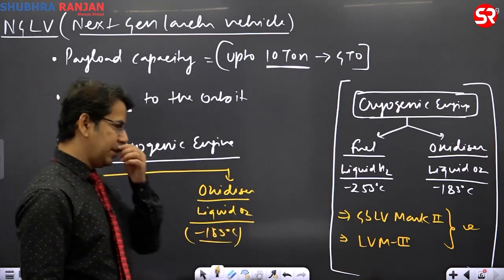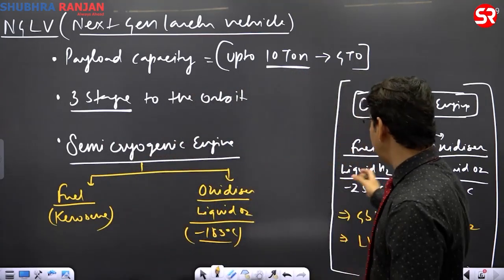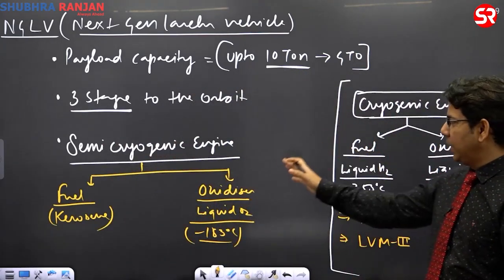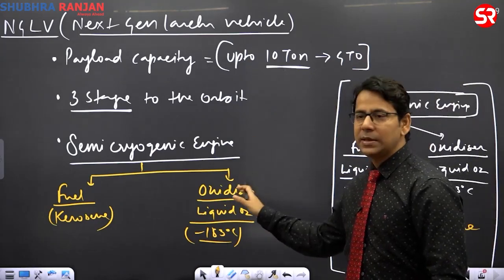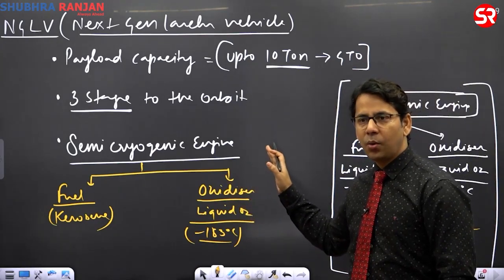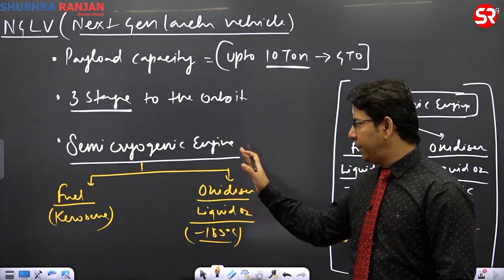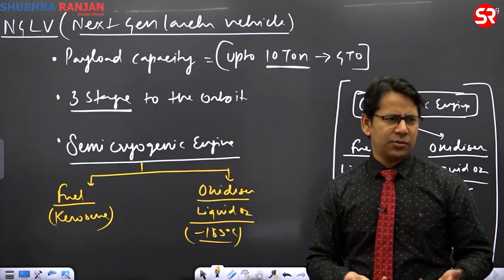So you have to understand why it is semi-cryogenic engine. Because in cryogenic both were at cryo temperature. Here, only one is at cryo temperature. Low temperature is needed only at one place, that is liquid oxygen. If you are using fuel, kerosene, then kerosene in liquid form.